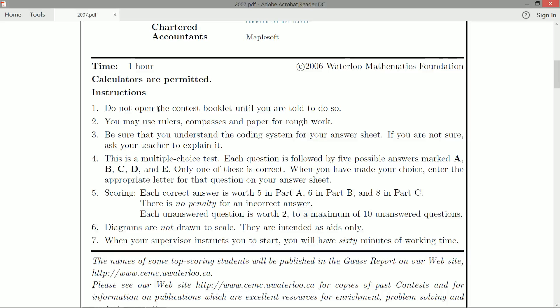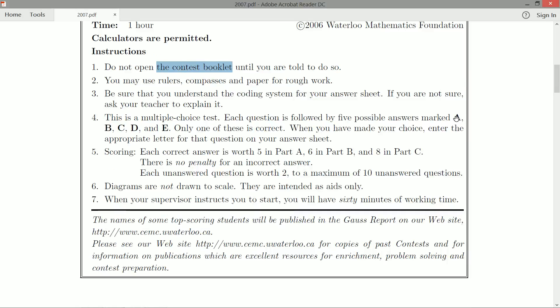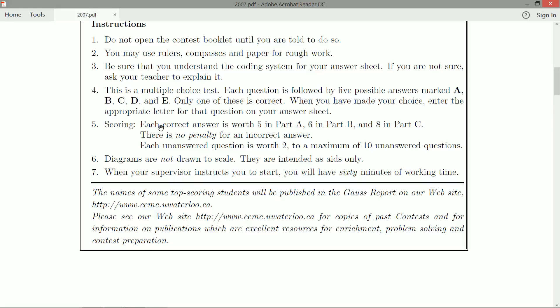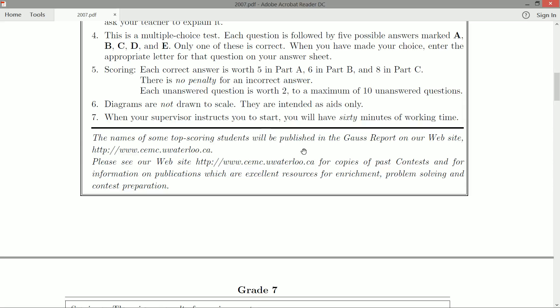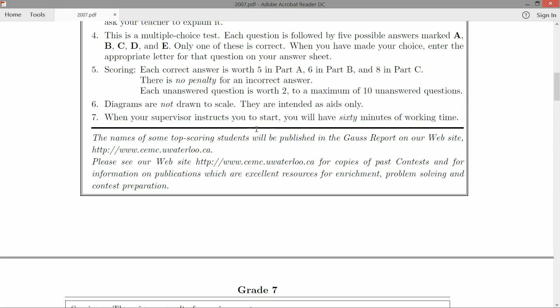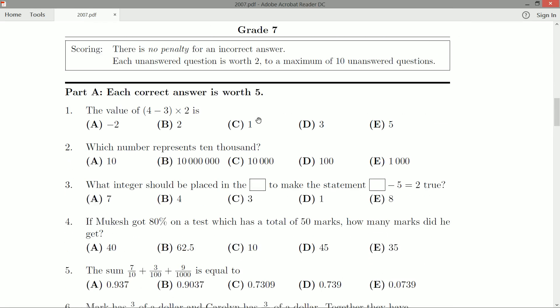Boring stuff like don't open the book until you're told to. We don't need that for this video series. Important things to note, there's always going to be five possible answers. Only one of them is correct. And that's something you need to bubble in. Other important things to know about are the scoring, especially that there's no penalty for an incorrect answer and a blank question is worth two marks. So if you don't know, don't guess. And I'll leave you guys to read the rest of these and we can jump into our very first question.